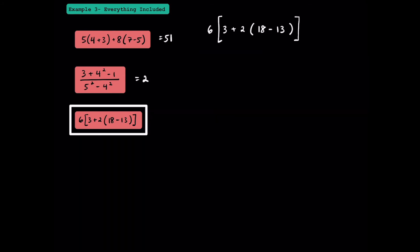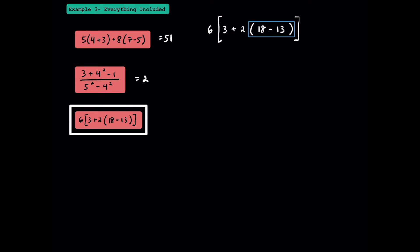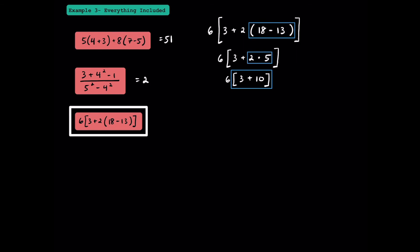Let's try one more of these together. First, we would look inside this pair of brackets, but inside there, this set of parentheses has to come first. 18 minus 13 is equal to 5. Since this 2 next to the parentheses means multiplication, we can change the parentheses to a dot for multiplication. Next, we're going to multiply 2 times 5 to get 10. 3 plus 10 is 13, so we're going to have 6 times 13. And finally, let's multiply 6 times 13 to get 78. That'll be our final answer here.